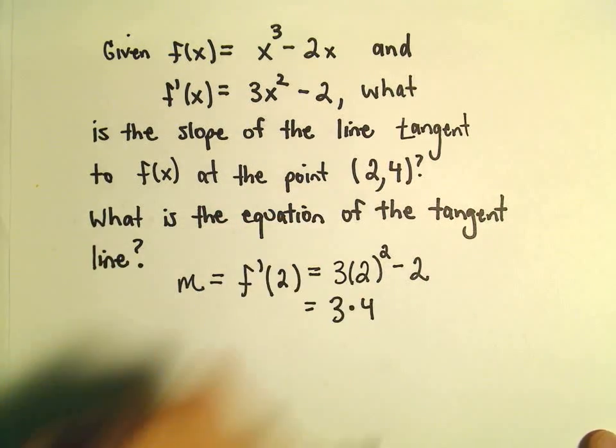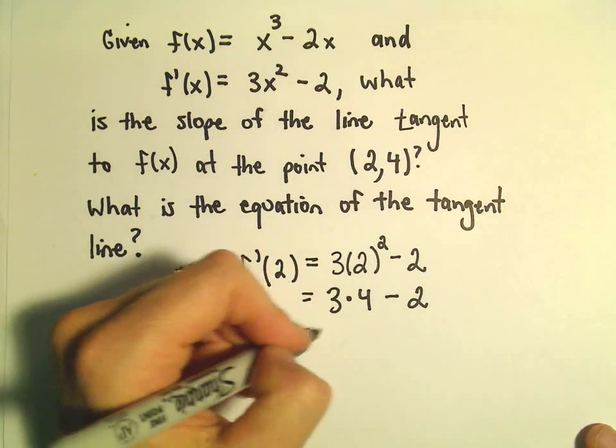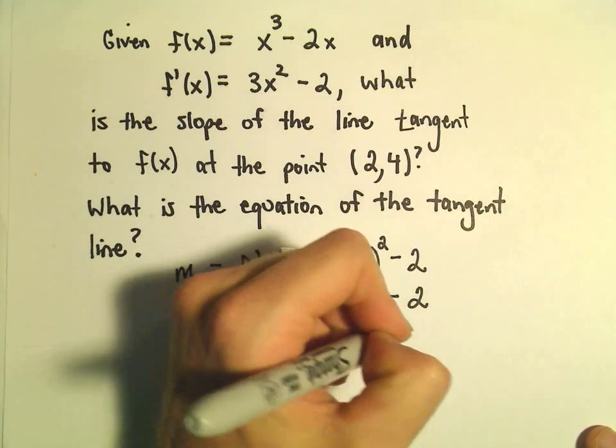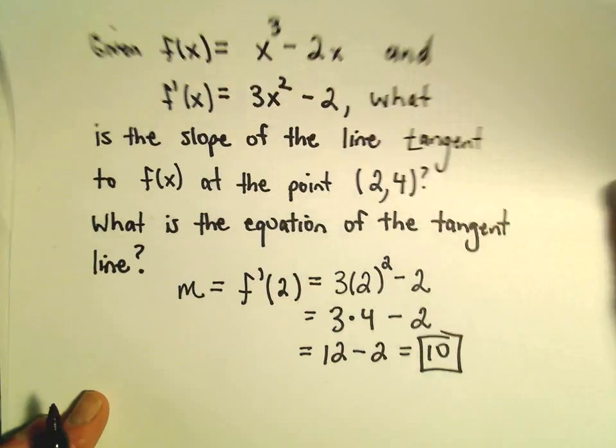Well, 2 squared is 4. 3 times 4 is going to be 12. 12 minus 2 is 10. And that's going to be the slope of the tangent line at that point.